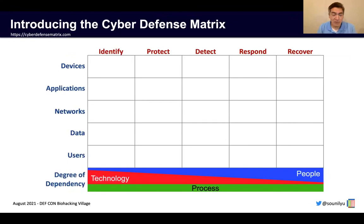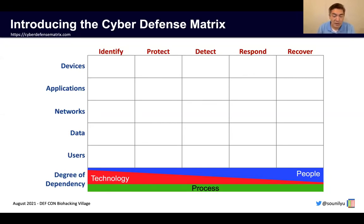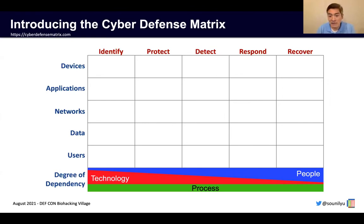The Cyber Defense Matrix provides a 50,000-foot strategic view of the entire cybersecurity landscape. It provides a view that helps us understand where we might have gaps in our program, where we need to go, where our capabilities fall — all the things that we need to do to run a mature and robust cybersecurity program. What you also see on the bottom depicts the degree of dependency that we have on people, process, and technology as we go across the five functions of the NIST cybersecurity framework.